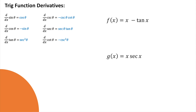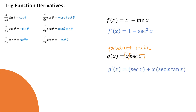Let's use these trig derivatives on some problems. If f of x equals x minus tangent x, what's the derivative? Take the derivative of x and the derivative of tangent x, and you get 1 minus secant squared. For g of x equals x times secant x — two functions being multiplied together — you need the product rule: derivative of the first times the second, plus derivative of the second times the first. These have secant in common, so you can factor that out.